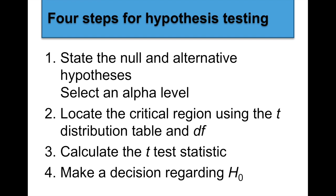Here are the four steps for hypothesis testing. First, state the null and alternative hypothesis — create that pairing. Second, select an alpha level — the researcher determines whether to set it at 0.01, 0.05, or 0.001. Third, locate the critical region using that alpha level and the T distribution — find the degrees of freedom and your T crit. Fourth, calculate the test statistic — your T obtained — and then make a decision: do you reject the null or fail to reject the null?